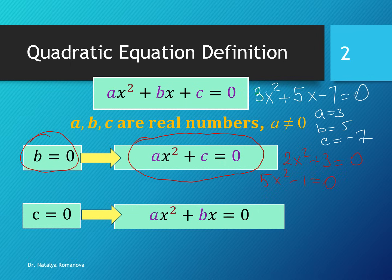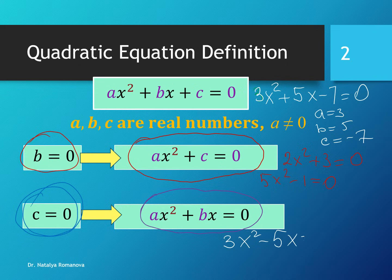The next special case: if c equals 0, we have an equation like ax² + bx = 0. For example, 3x² - 5x = 0 or 7x² + x = 0 is the second special case of the quadratic equation.